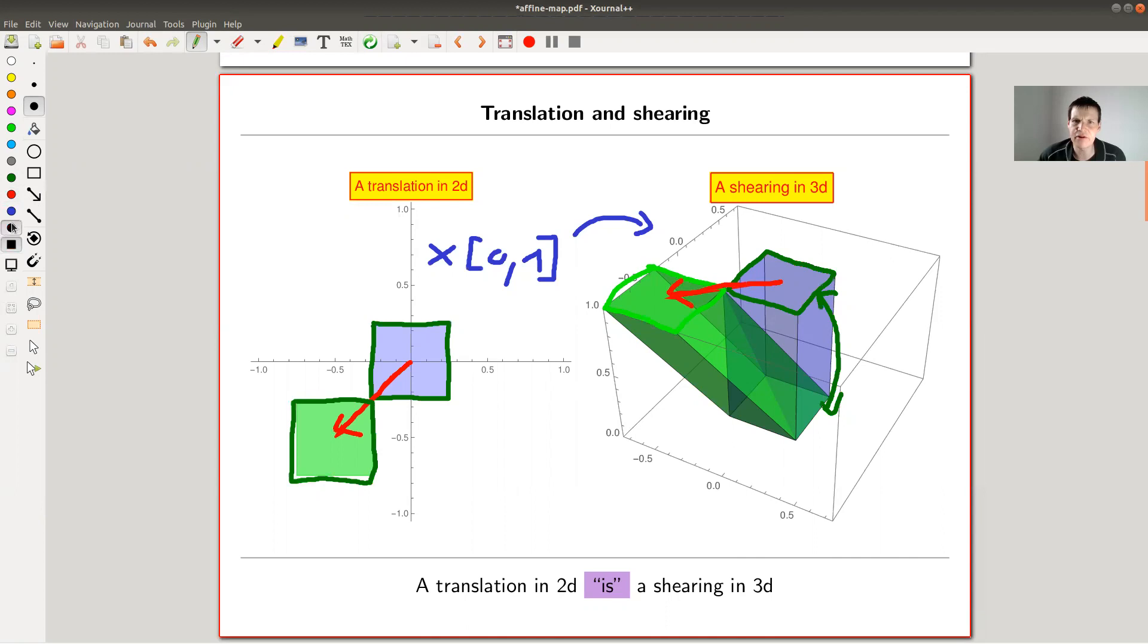is actually a shearing operation. So you shear this blue cube into the green cube. It's a shearing operation. And that's a linear operation.